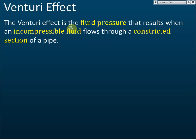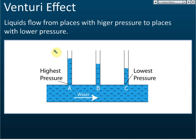The Venturi effect is the fluid pressure that results when an incompressible fluid flows through a constricted section of a pipe. I will show you later. Let's say we have a pipe with water flowing from left to right. We have three smaller tubes here. Water always flows from high pressure to low pressure, so the pressure to the left is higher than to the right.